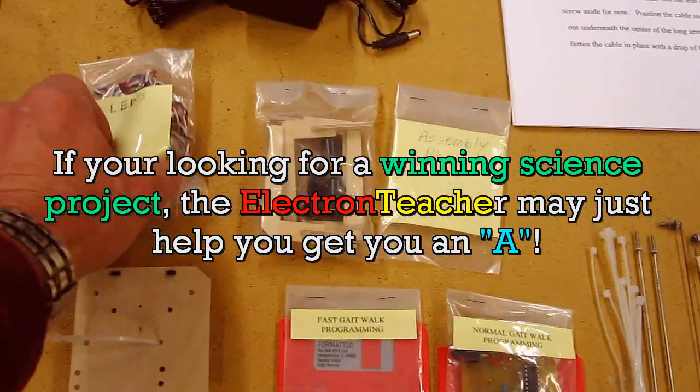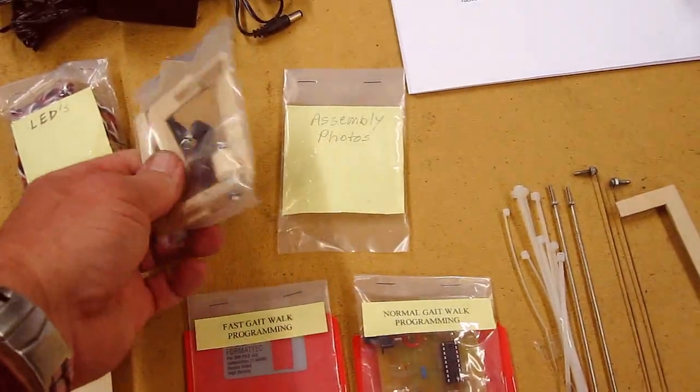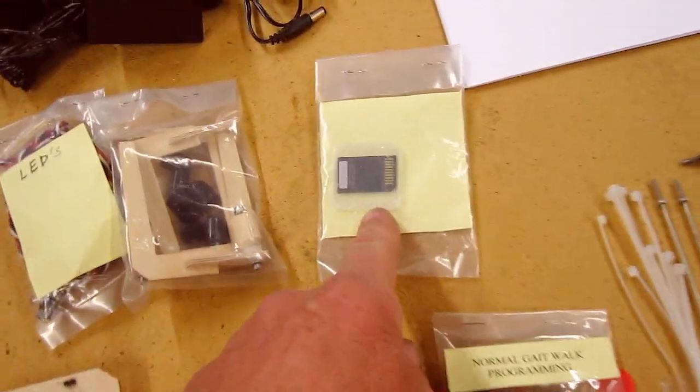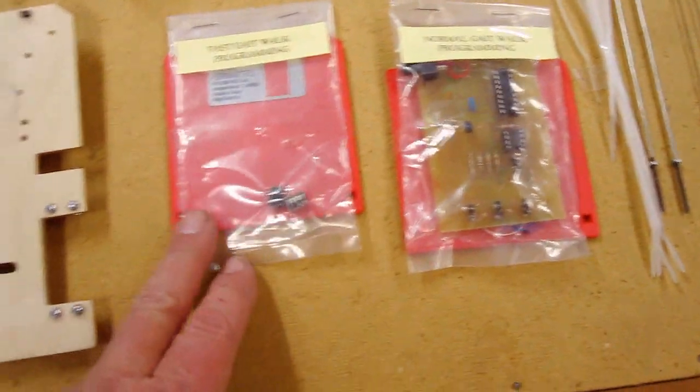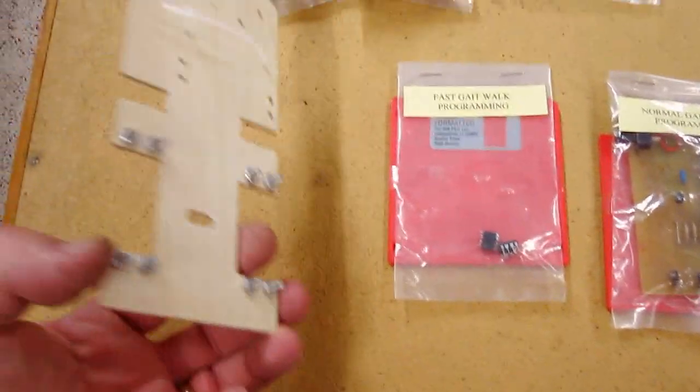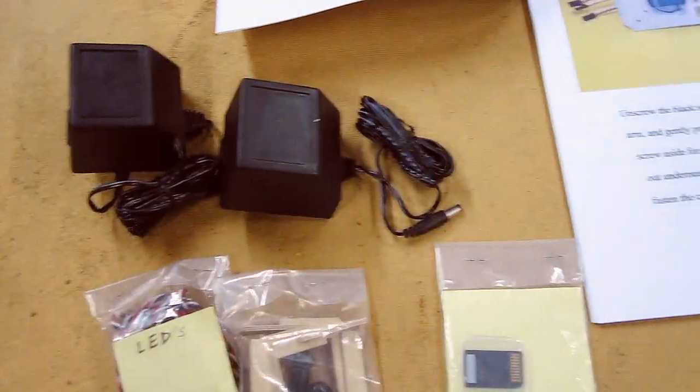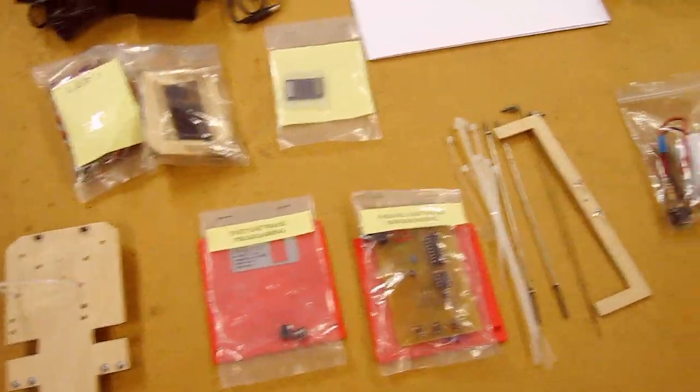Let me show you what came in this box. Ruben, you've outdone yourself. Here's the LED package, the wood, assembly photos on an SD card, normal gate walking, fast gate walking chip, all this wood cut out beautifully, all the parts, battery, three servos, and two chargers. We're going to put this together and Jeff and I are gonna race.